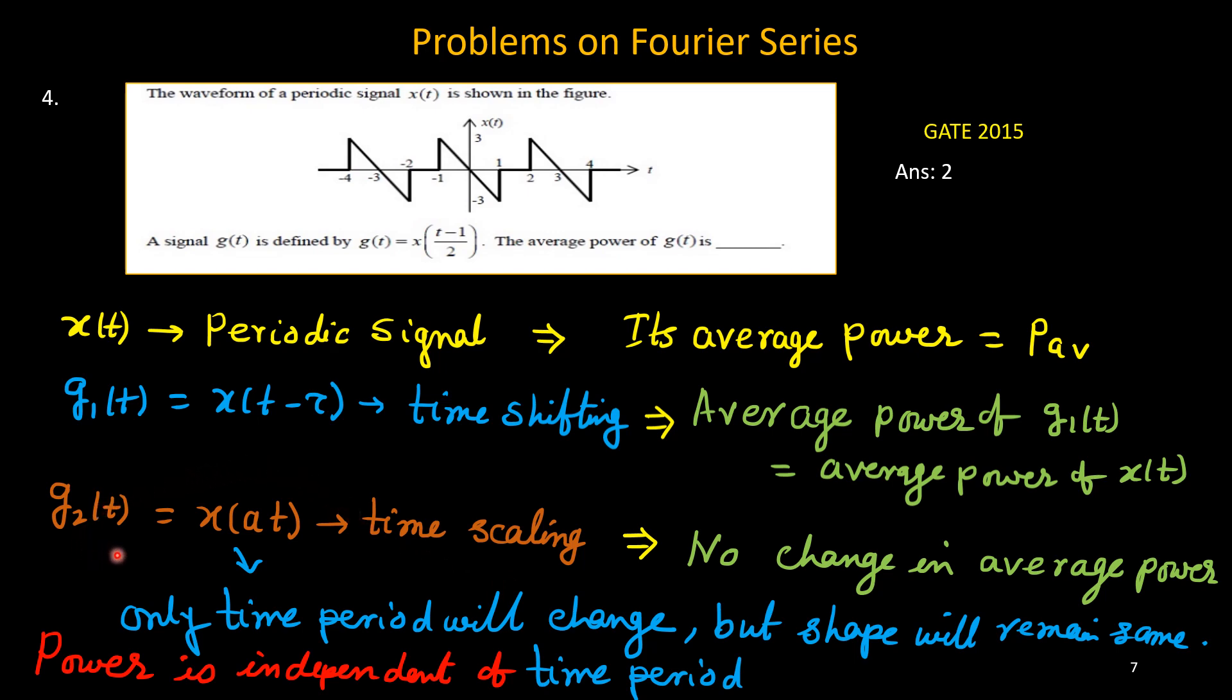Now you see here, if signal is expressed as time scaling means compression or expansion, then what will happen? Signal shape will remain same. Only thing is that time period will change. If it is compressed, then time period is less. And if it is expanded, time period is more. But you see, the power is independent of time period. It does not depend on time period. Like if I have sine omega_0 t, and that signal if I compressed by two times, then I will have sine of 2 omega_0 t. But both signals will have same power. It depends on only amplitude. So the signal, if signal is having some time shift, or if it is having some time scaling, the average power will not change.